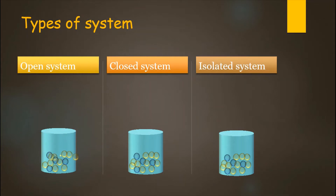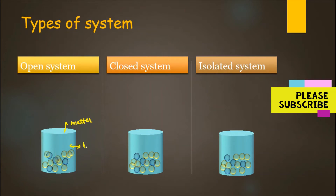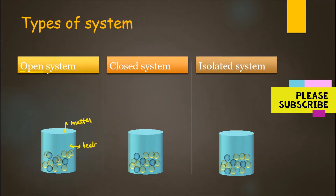If you observe, you can see that in this system, matter can be exchanged between the system and surrounding, and heat can be exchanged through the walls of the container. So in this system, where both matter and heat can be exchanged, it is called an open system.